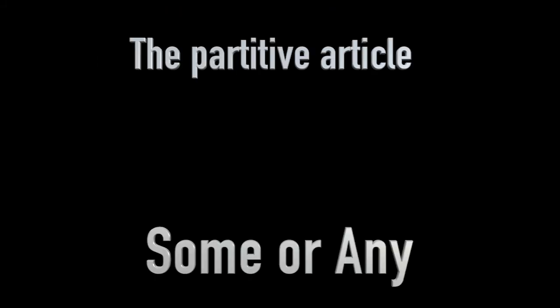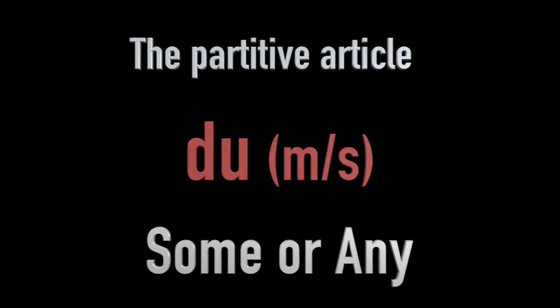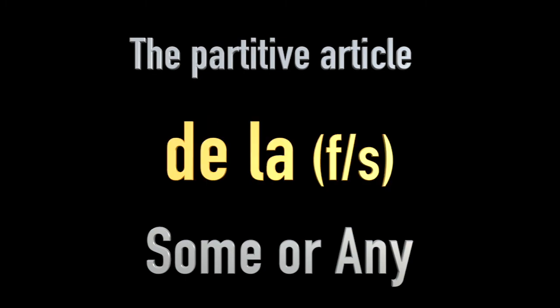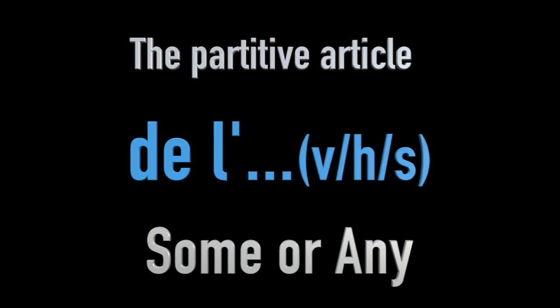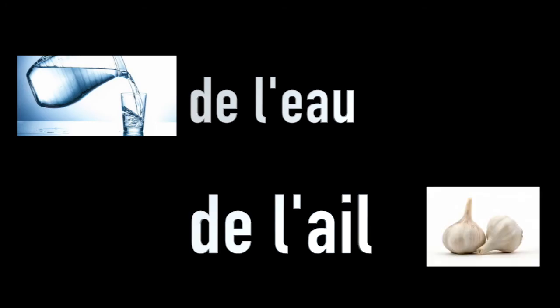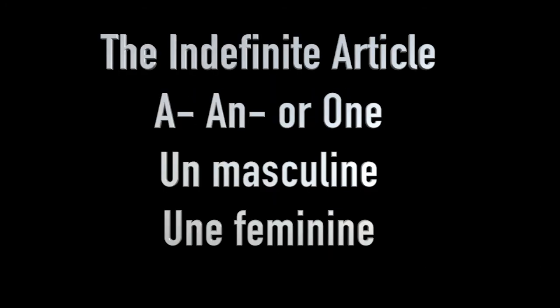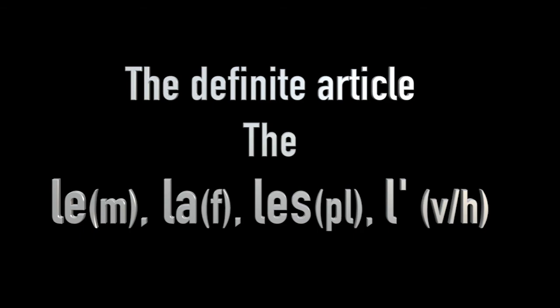Hopefully you'll have understood how the words for 'some' or 'any' work. It's tied to the gender of nouns — whether they're masculine or feminine. Du for some or any with masculine nouns; des for plural nouns like potatoes, crisps, chips; and de l' for nouns beginning with a vowel or H, such as de l'eau and de l'ail. We've now covered all three: we can say we would like a, I would like the, or I would like some or any.